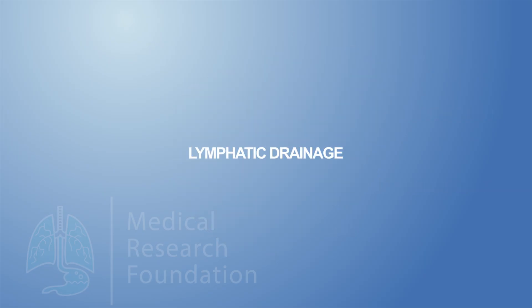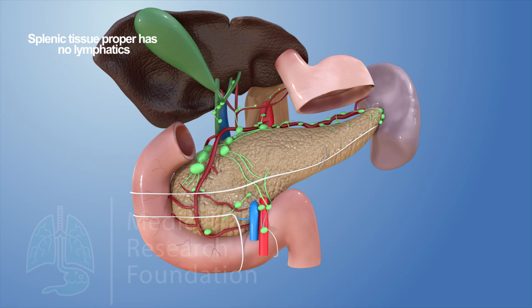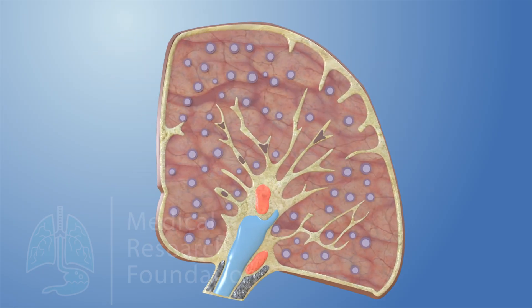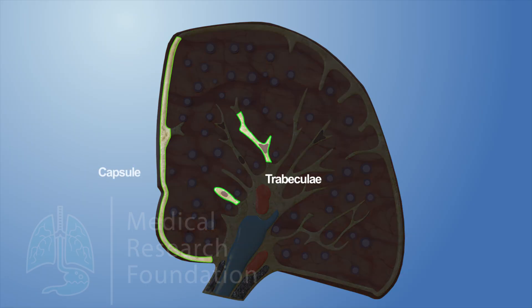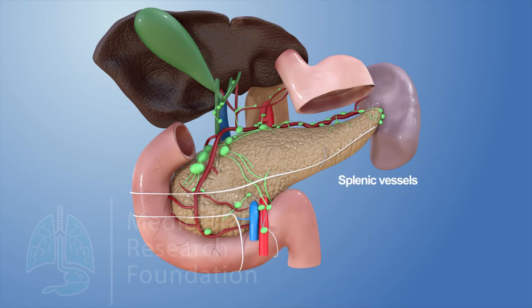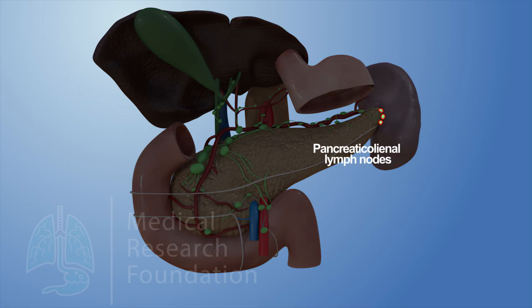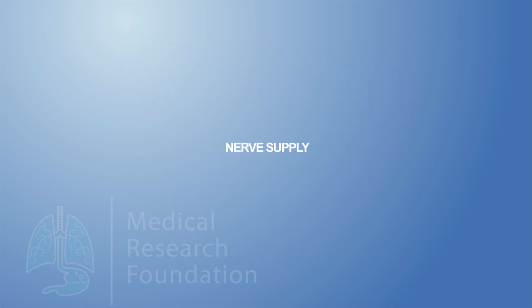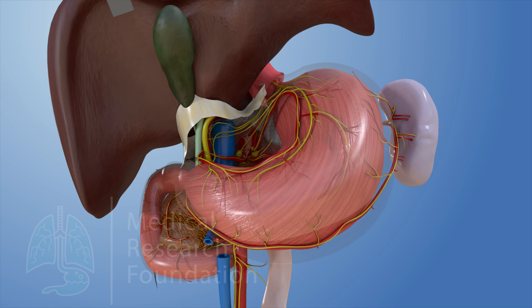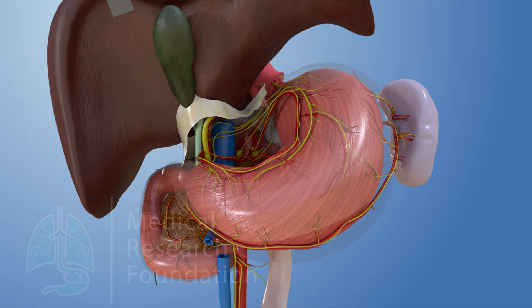The splenic tissue proper has no lymphatics. The tissue fluid formed in the spleen freely enters the venous sinusoids. The splenic lymphatics are confined to its trabeculae, capsule, and visceral peritoneum, and drain along the splenic vessels into the pancreaticoceliac lymph nodes. The spleen is supplied by sympathetic fibers derived from the celiac plexus, which supply blood vessels (vasomotor) and smooth muscle fibers present in the trabeculae and capsule.